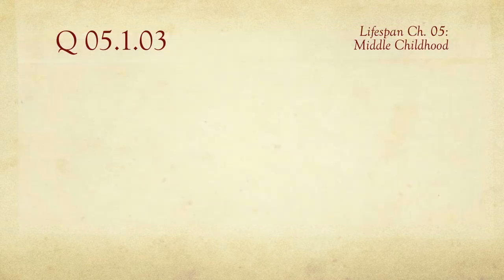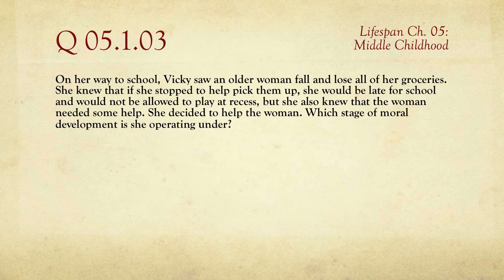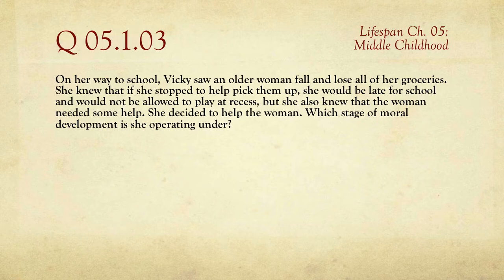The third question is: on her way to school, Vicki saw an older woman fall and lose all of her groceries. She knew that if she stopped to help pick them up, she'd be late for school and would not be allowed to play at recess. But she also knew that the woman needed some help. She decided to help the woman.